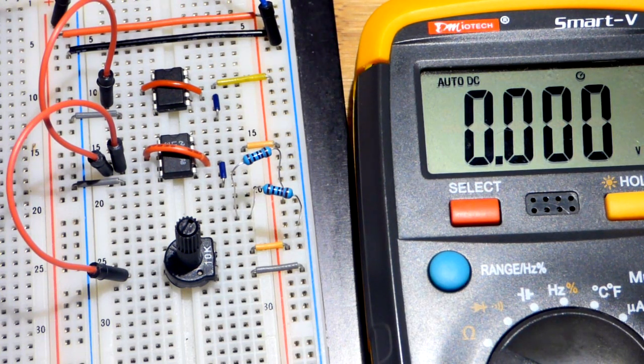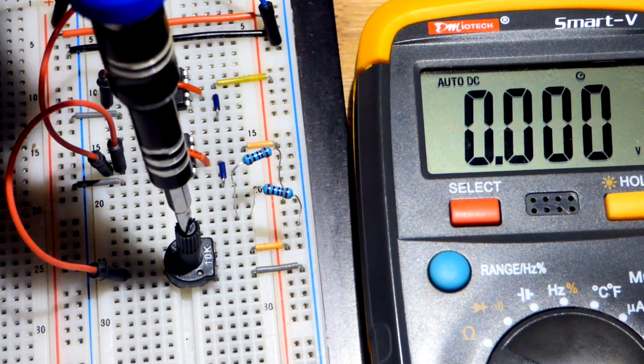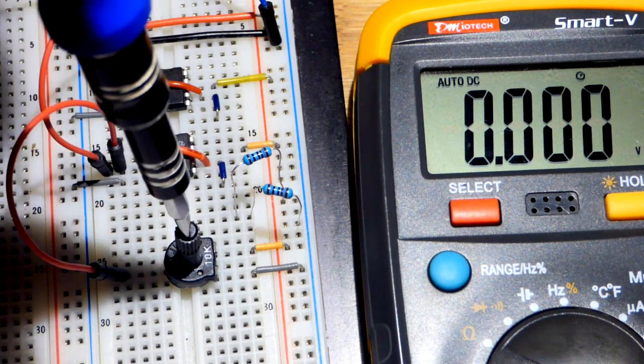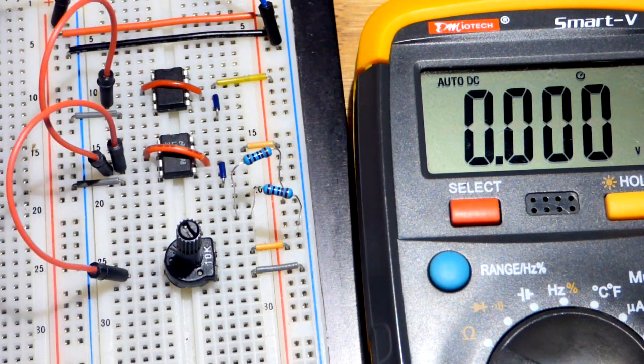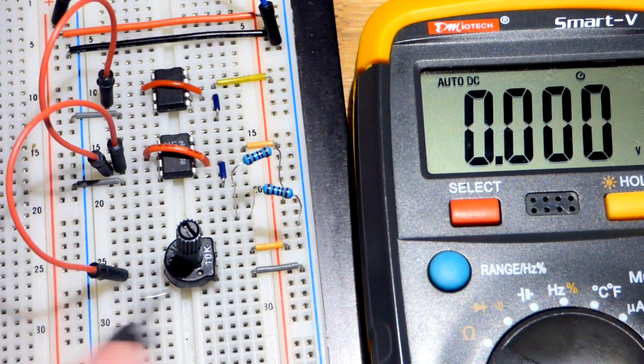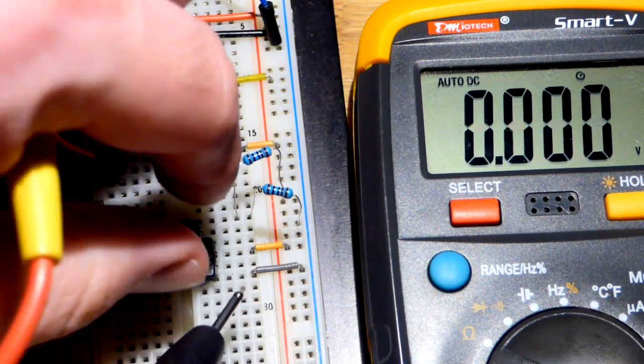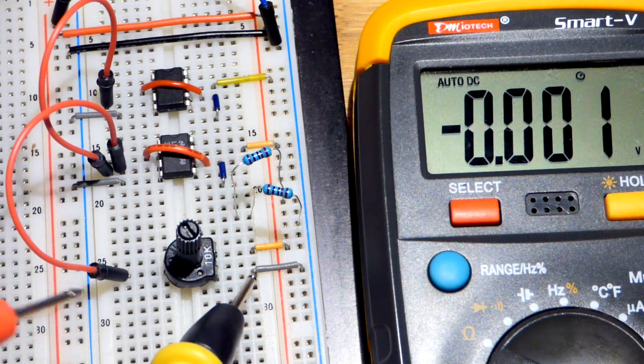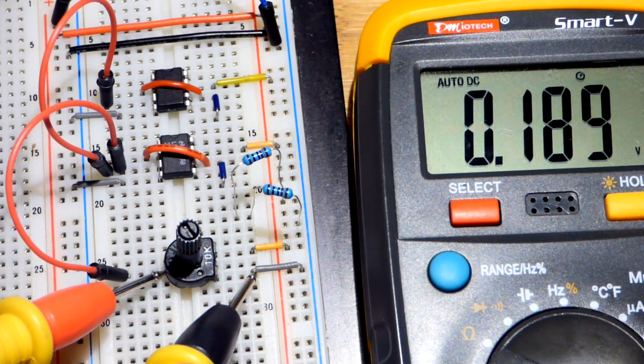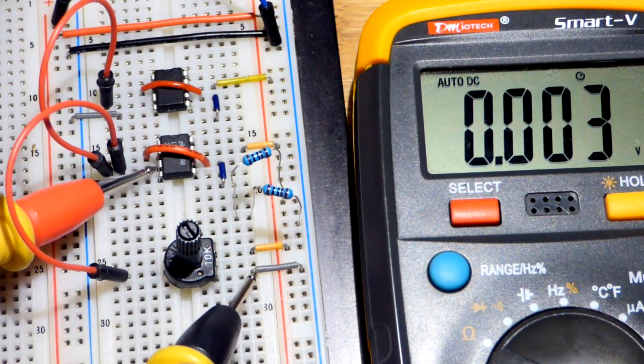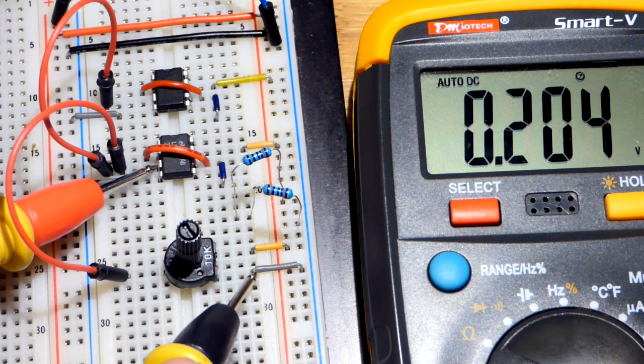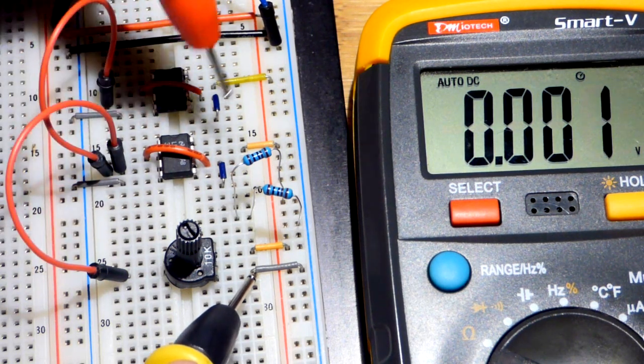Now we are going to turn the trim pot down to the negative rail for 0 volts, if we want to look at it that way. Go in here. So, 0.189. Looks like that's what we got.